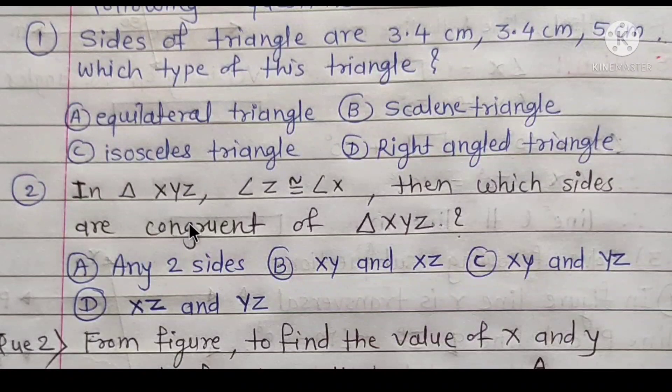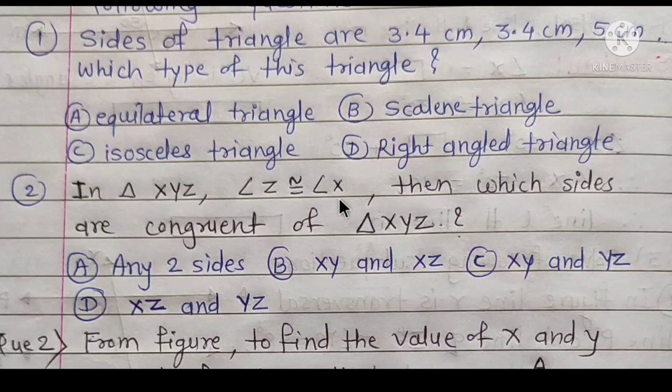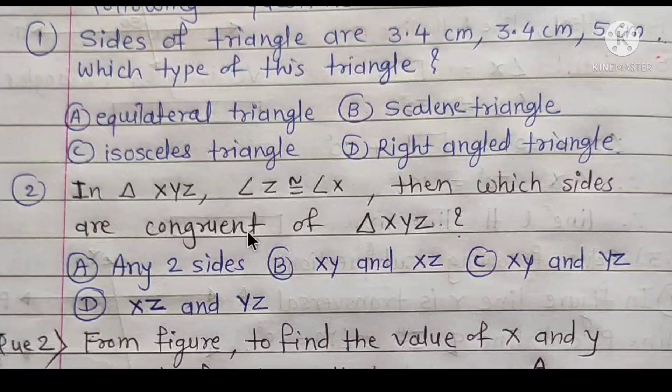Second part: In triangle XYZ, angle Z is congruent to angle X. Then which sides of triangle XYZ are congruent?